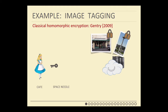Of course, here we're at QIP, so we would like to think: what happens if instead of Alice taking photos, she has some quantum data? She would like to send out this quantum data to some cloud computer, some other server, and would like the server to be able to do computations on this data without compromising Alice's privacy. This talk is about the quantum case of this problem.